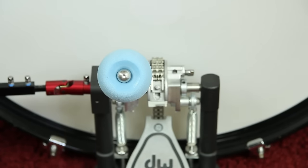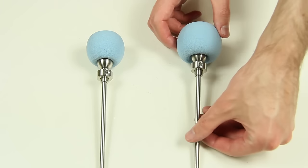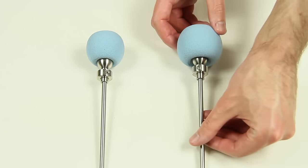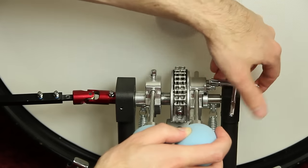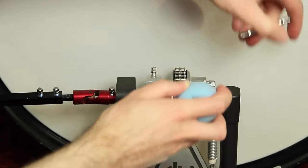As the beater ball was too big in diameter for this double bass pedal, we asked the guys from R-Drums if they can make a smaller version. The smaller beater head fits excellent into the DW-9000.